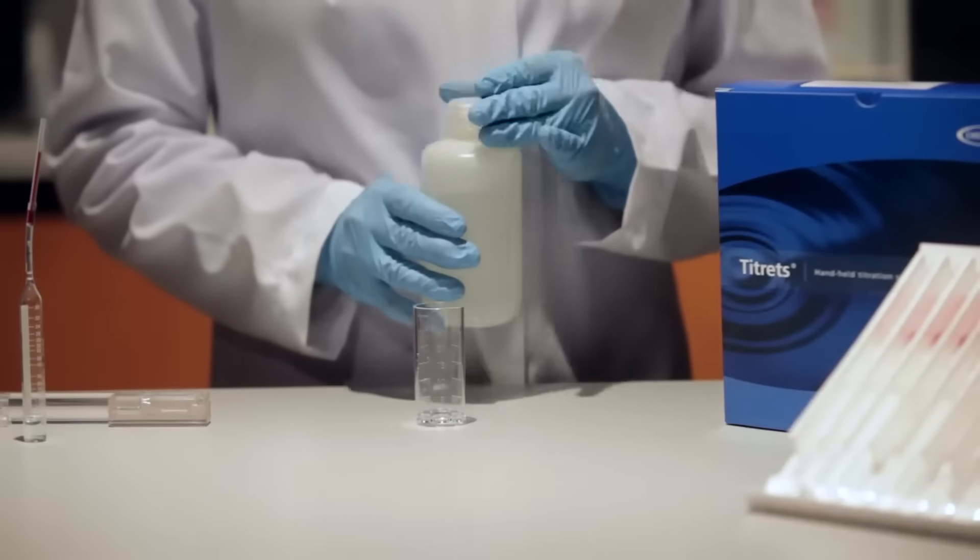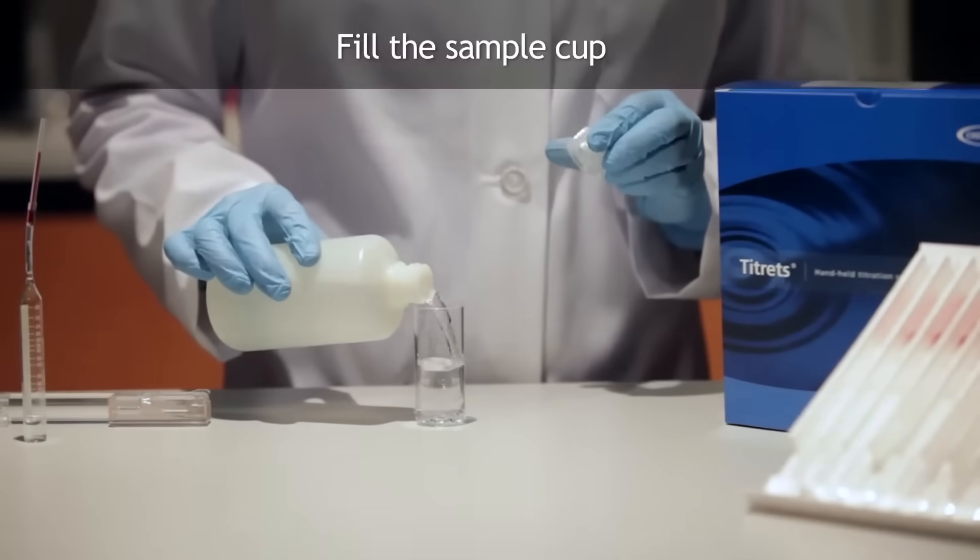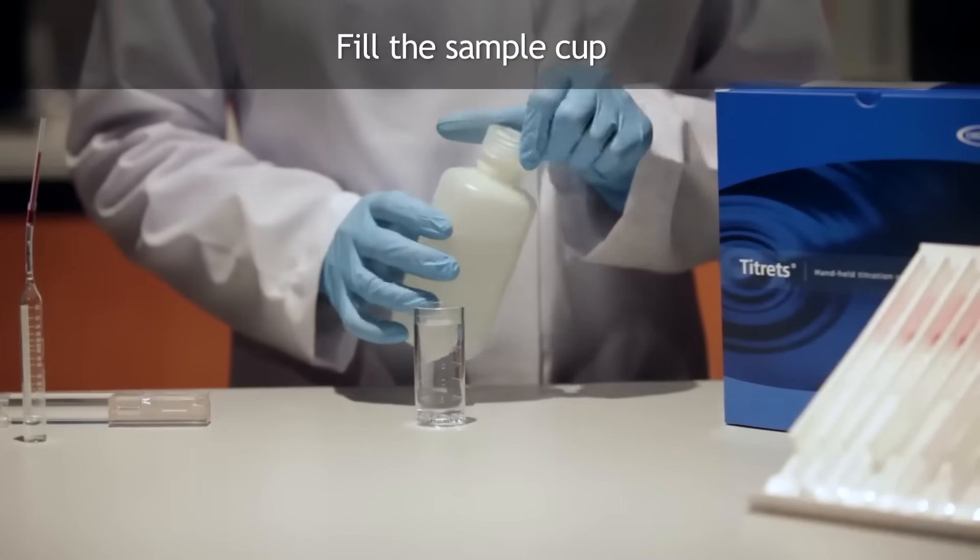To perform a total hardness test using the Titrets method, fill the sample cup to the 25 milliliter mark with the sample to be tested.